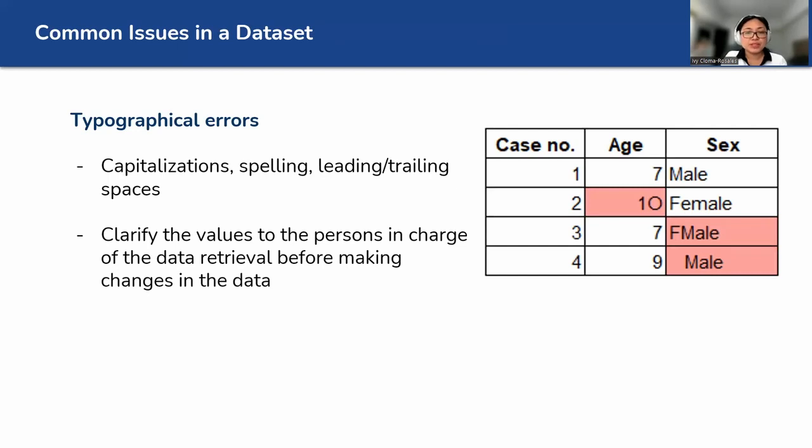Typo errors. Let's look at this. The 10 doesn't look like 10, it's like 1-0. And then you may have typing like this, is this male or female? Or sometimes there are inconsistent spaces. So when you analyze this, it's quite difficult sometimes because you have to make decisions whether this is female or male.